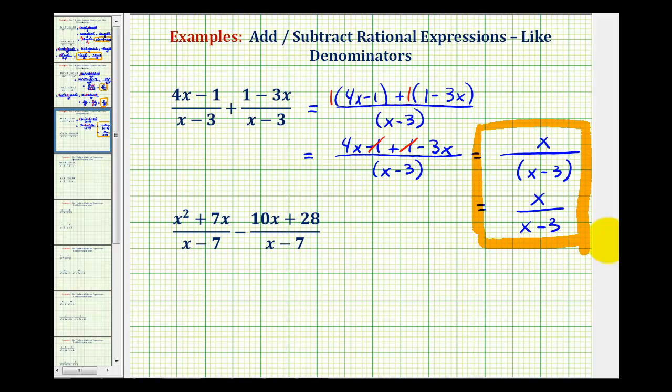Let's take a look at our second example. Again, notice how we have a common denominator of the quantity x minus 7. So the denominator is going to stay the quantity x minus 7, and then we'll subtract the numerators. So we'll have the quantity x squared plus 7x minus the quantity 10x plus 28.